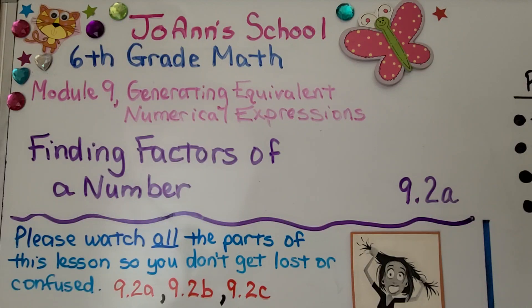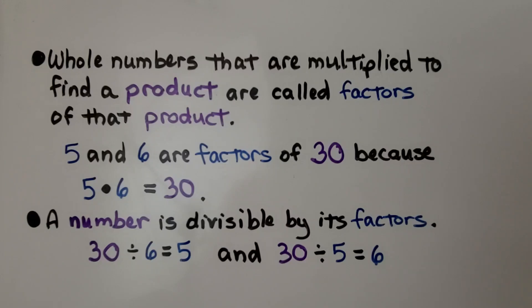Lesson 9.2a Finding Factors of a Number. Whole numbers that are multiplied to find a product are called factors of that product. 5 and 6 are factors of 30 because 5 times 6 is equal to 30.